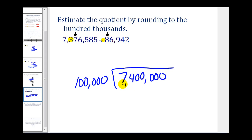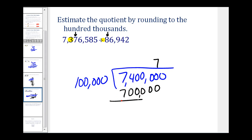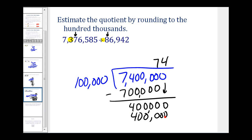We need to include enough digits in our dividend so there's at least 100,000, so we go all the way to 740,000. How many hundred thousands are there in 740,000? That would be 7. Seven times 100,000 is 700,000. We subtract, giving us 40,000. Bring down the last digit to make this 400,000. How many hundred thousands in 400,000? That would be 4. Four times 100,000 is 400,000, with a remainder of zero. So this quotient is approximately 74.